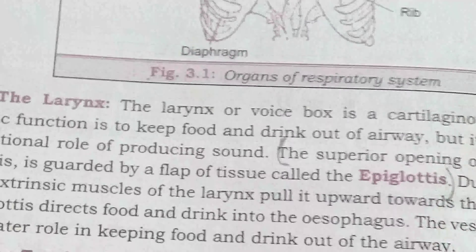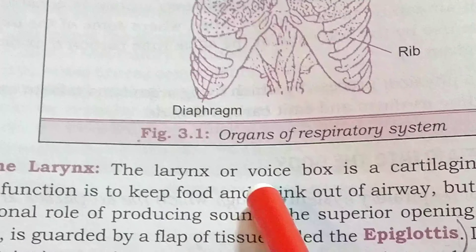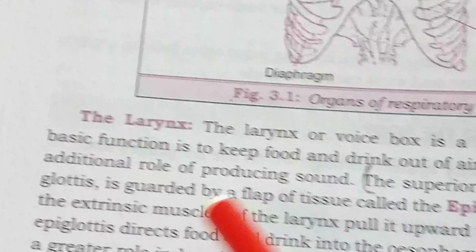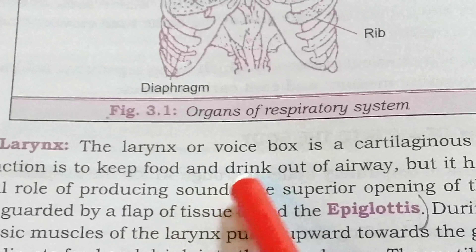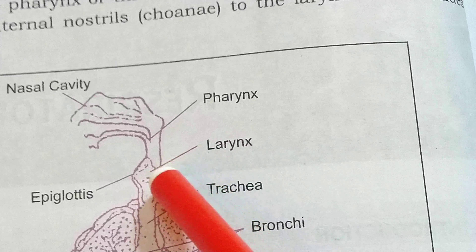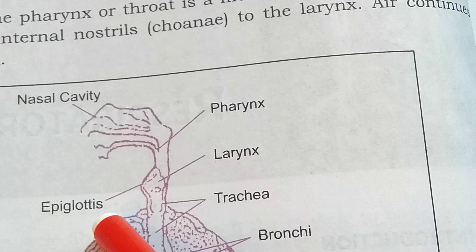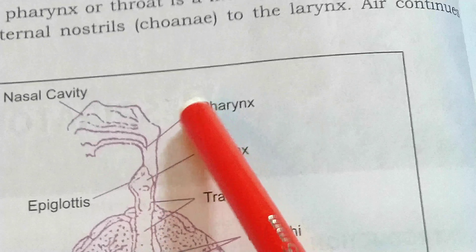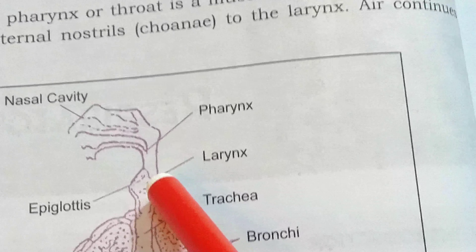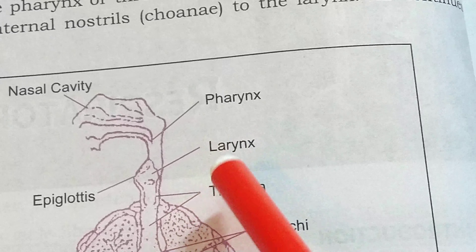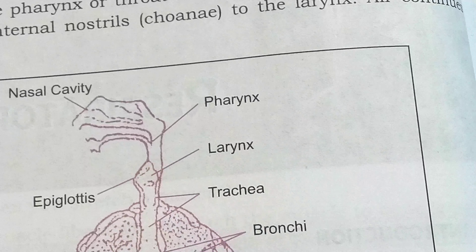Next is the larynx, also known as the voice box. It is a cartilaginous chamber whose basic function is to keep food and drink out of the airway. After the pharynx, the larynx helps prevent food or water particles from entering the airway tract.